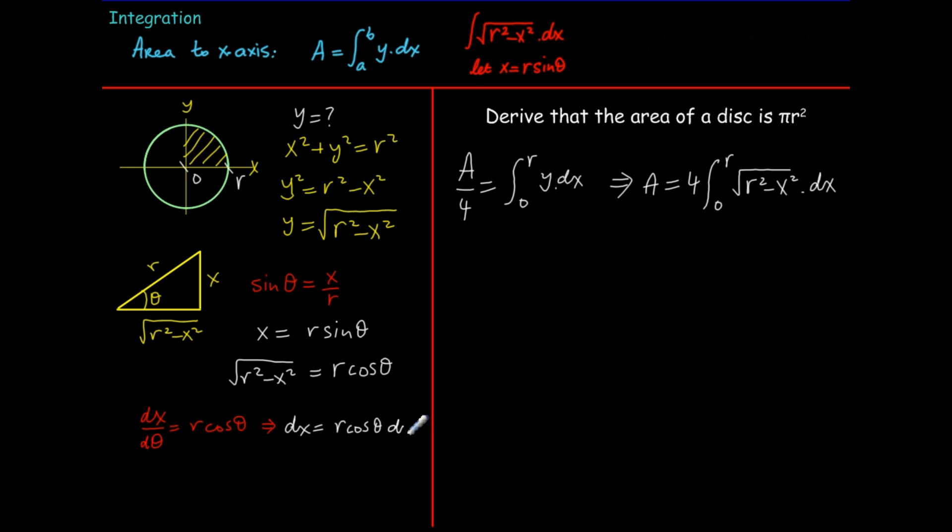Now we're nearly ready to make a substitution but we have these limits r and zero. So if x is r sine theta what is theta? We see that theta is the sine inverse of x divided by r. It doesn't look the prettiest but we see it's not too bad when we substitute in r and zero into this.